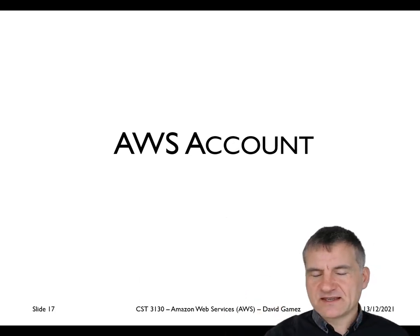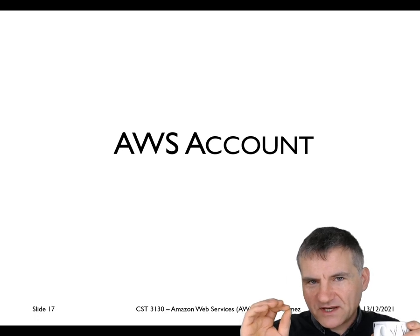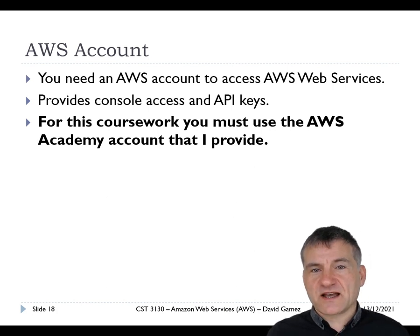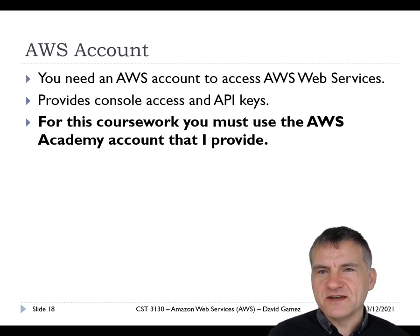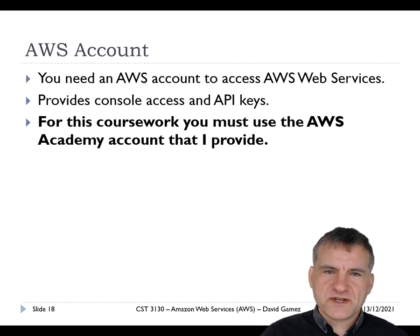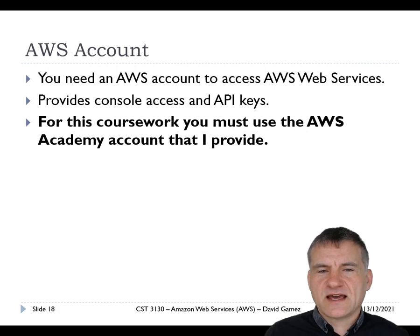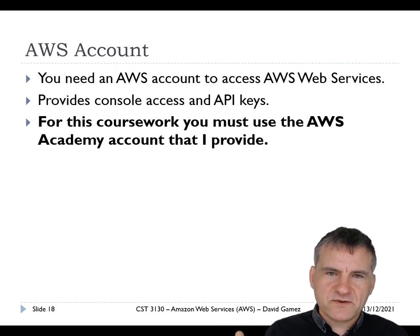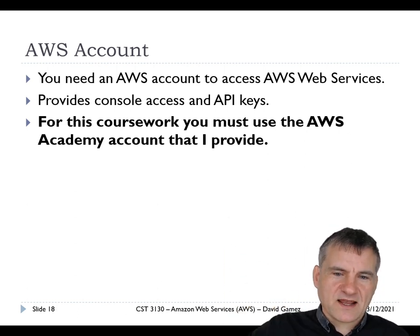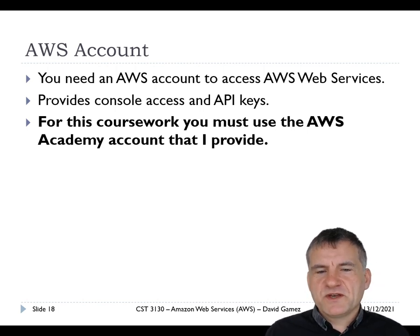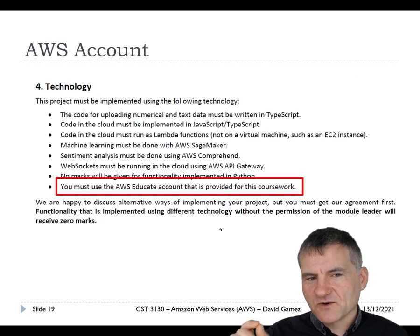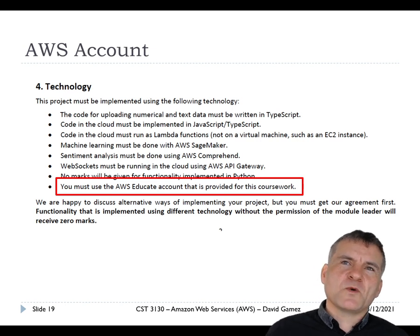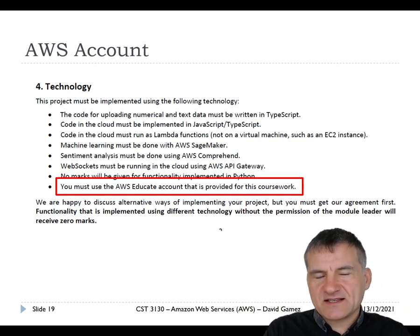Now I'm going to explain how your account will work with AWS. AWS is a company making $45 billion in revenue by selling services. To use them you need an AWS account — access to the console, the command line interface, and API keys for local code to authenticate with the cloud. In this coursework, you must use the AWS Academy account I provide. It means I can help you more easily, I have direct access to all your AWS accounts, making marking and support much simpler.